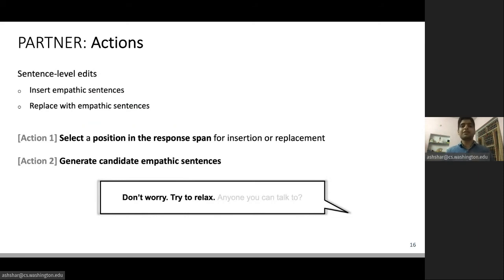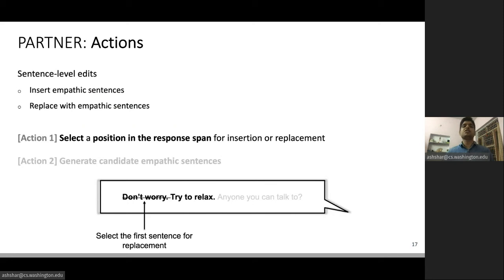In the example that you see on this slide, through action one, the agent can select the first sentence for replacement. And through action two, it can generate a candidate sentence like 'being manic is no fun,' which can be used for replacing the first sentence.